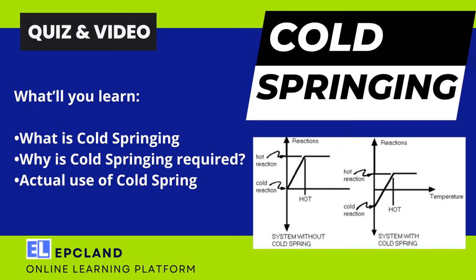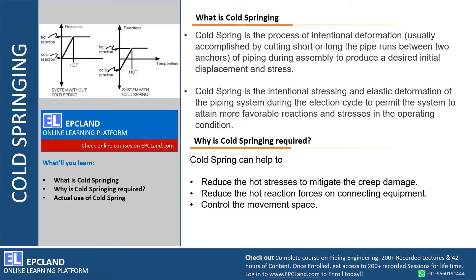Let us try to understand what is cold springing. Cold springing is a process of intentional deformation. What do we mean by intentional deformation? It is a deformation which we induce intentionally. When we are cutting the spools, we can keep them short or long. These short and long spools, which we intentionally induce, will cause the desired initial displacement.